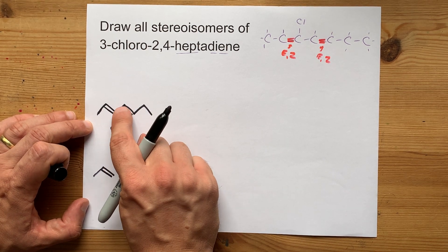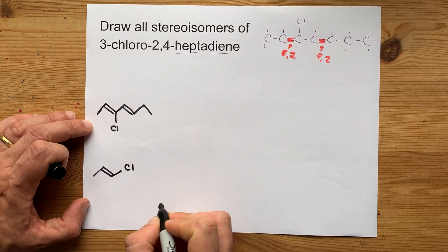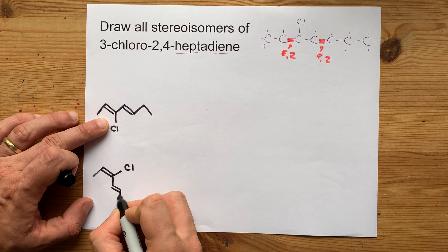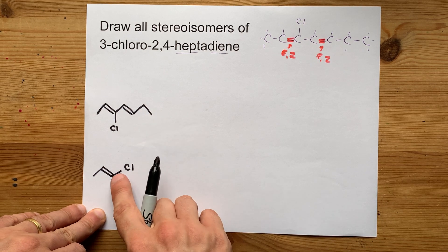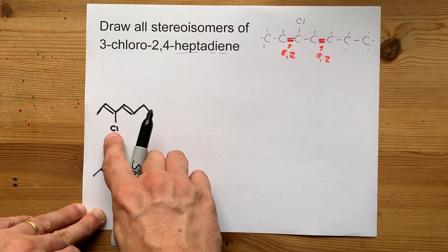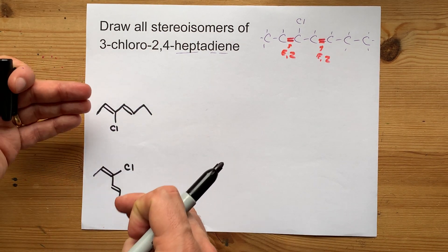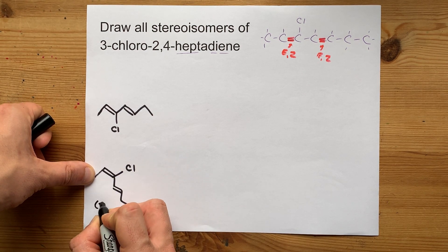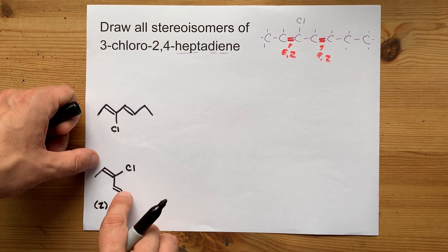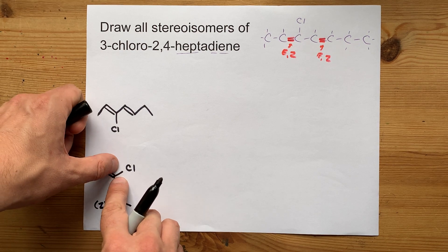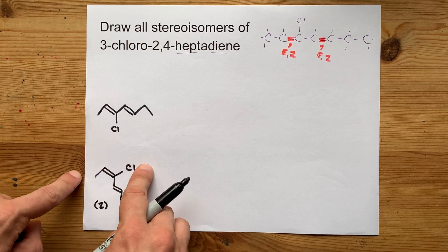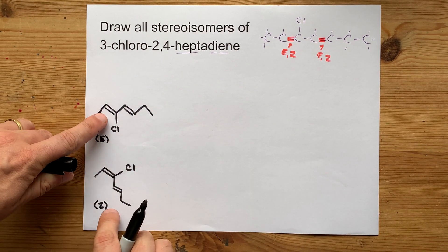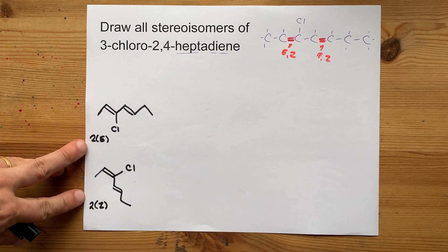To get the other stereoisomer around the C2 double bond, I switch the chlorine and the carbon chain. So now the chlorine goes up and I draw a trans double bond there, putting the carbon chain in the direction the chlorine was going. This gives me the E and Z isomers around the C2 double bond. This one is Z — I know that because between hydrogen and carbon, carbon has a higher atomic mass, and between chlorine and carbon, chlorine has a higher one. These priority groups are on opposite sides of the double bond, so it's Z. And then this one is E.